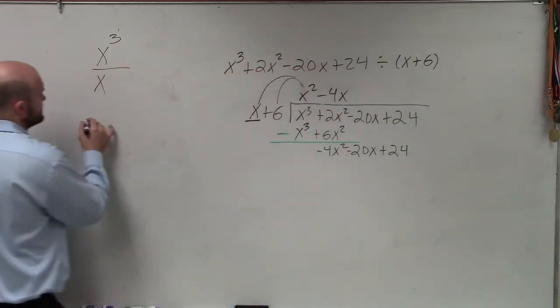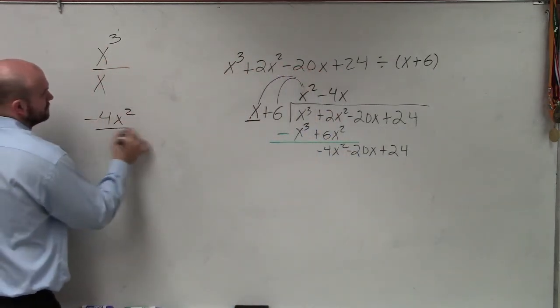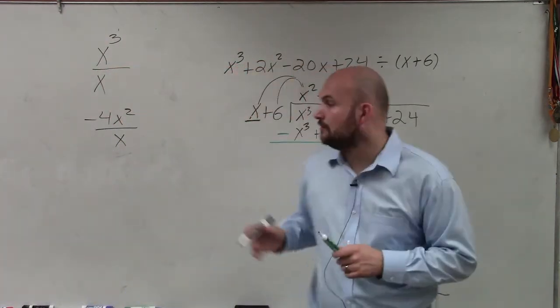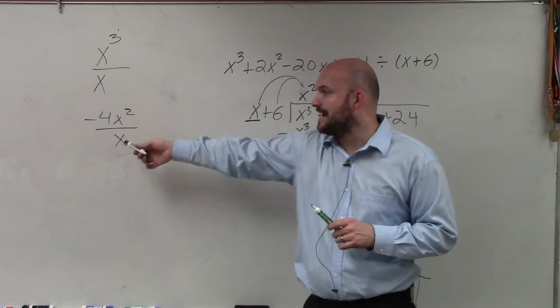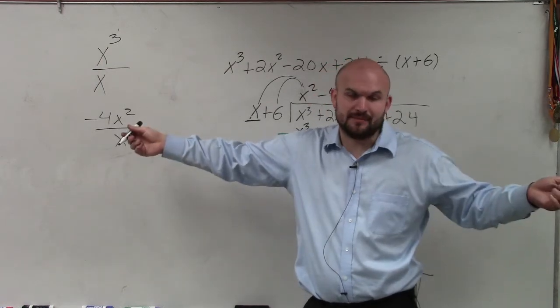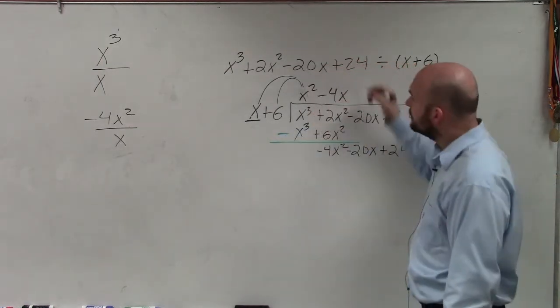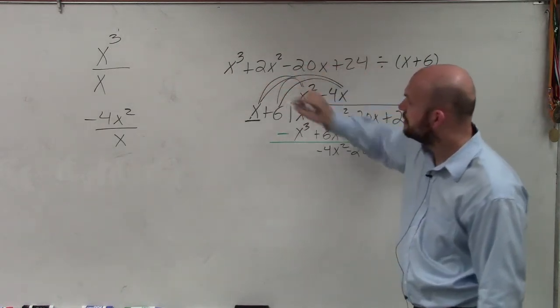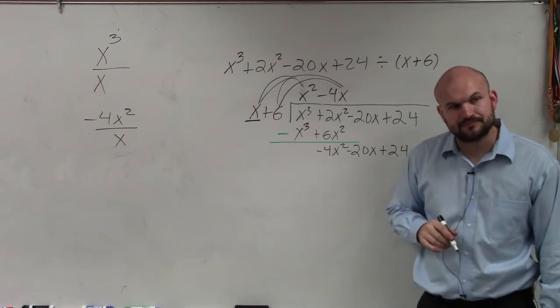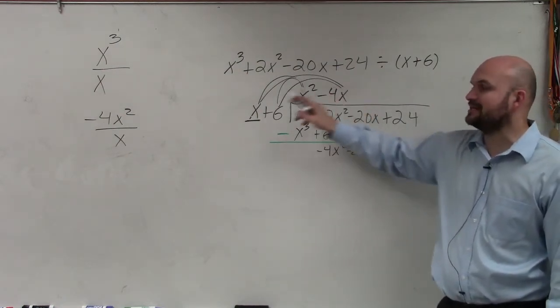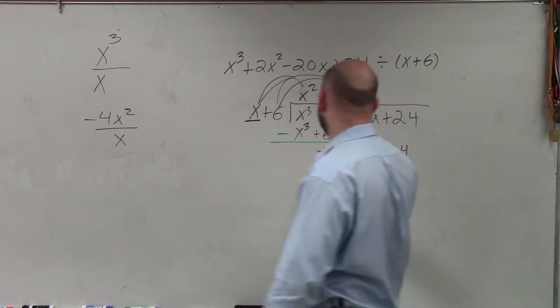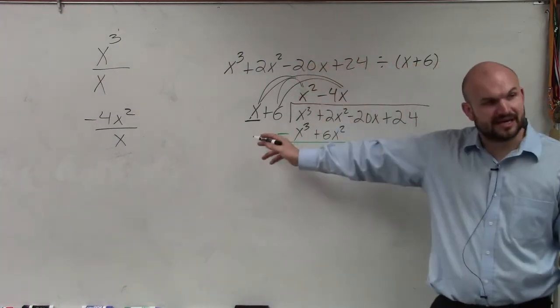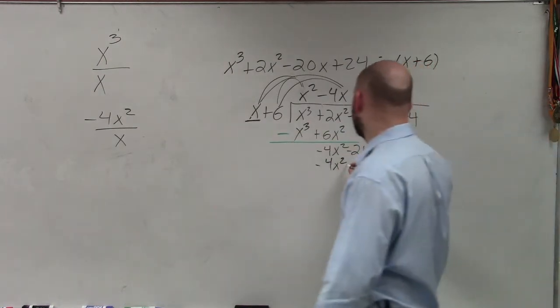Again, if you'd like to be able to do this in this format, what you can see is x squared divided by x is just going to be x to the first power, and then you'd have negative 4. Now, I take the negative 4x and I multiply it by x and I multiply it by 6. So negative 4x times x is going to leave me with a negative 4x squared. Negative 4 times 6 is going to leave me with a negative 24x.